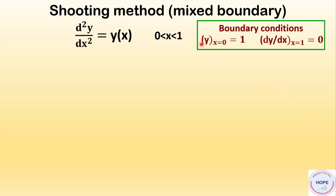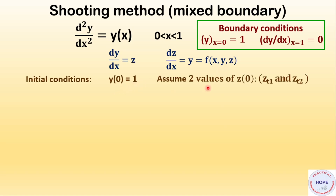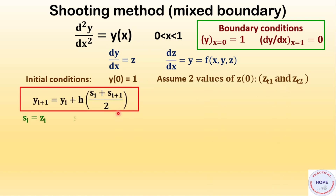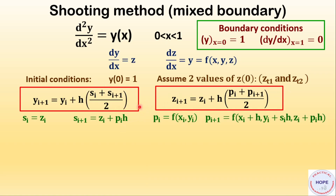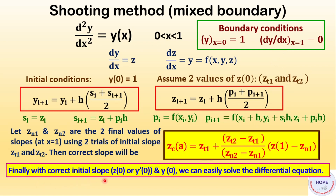Moving on to the next case — mixed boundary. It is more or less similar to the previous case with just one thing to change. As before, dy/dx = z and dz/dx = y. We assume two initial values of the slopes. Let zn1 and zn2 be the two final values of slopes at x equal to 1 using two trials of initial slopes zt1 and zt2. The correct slope is given by this expression, assuming the two trial initial slopes are linearly proportional to the final slope at x equal to 1. Finally, with the correct initial slope and y0, we solve using RK2.